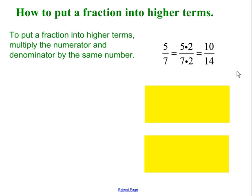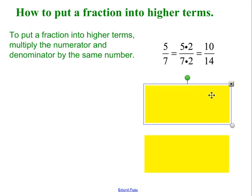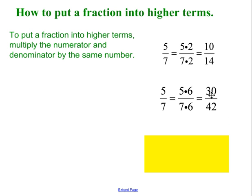In my first example, I start with 5 sevenths and I multiply the top and bottom by 2, and I get 10 fourteenths. The reason this is legal is because 2 over 2 is 1, and multiplying by 1 does not change the value of a number. In my second example, I start with 5 sevenths, but now I'm multiplying by 6 over 6. 6 over 6 is still a form of 1, and I get 30 over 42.